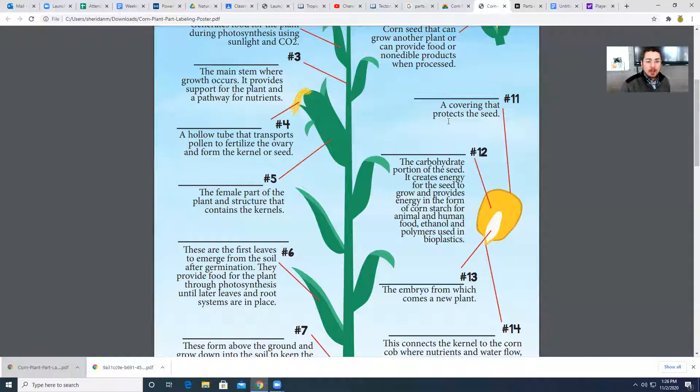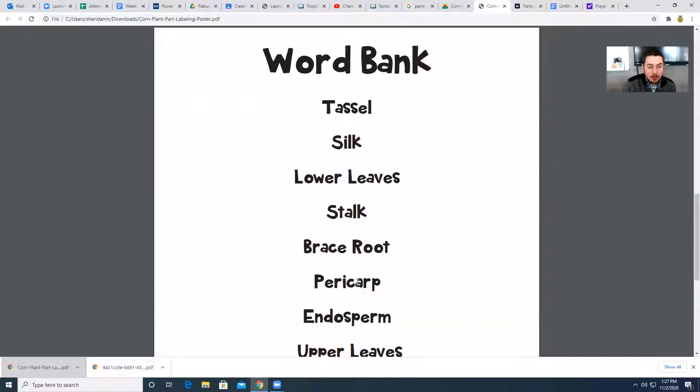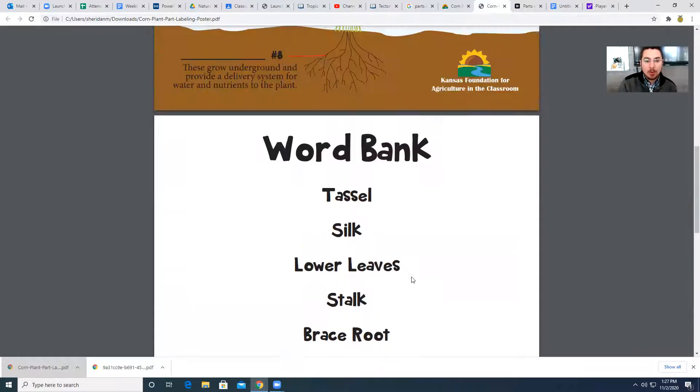So number 11, a covering that protects the seed. If you look down here, this is called the pericarp. So this is the word that defines the covering of the seed. It's what protects it. It's the outer coating of that corn kernel.